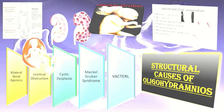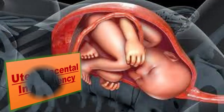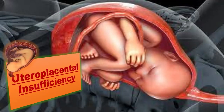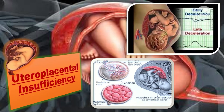Uteroplacental insufficiency results from conditions like diabetes, drug abuse, post-term pregnancy, cardiac conditions like high blood pressure, conditions causing blood clots, or developmental issues with the placenta. This uteroplacental insufficiency results in a decreased amount of amniotic fluid.